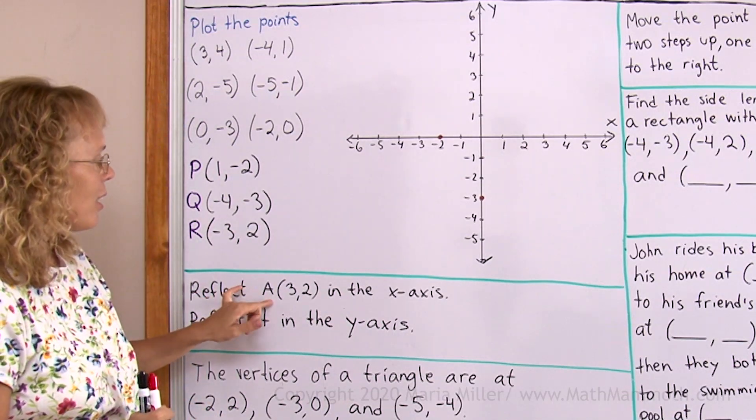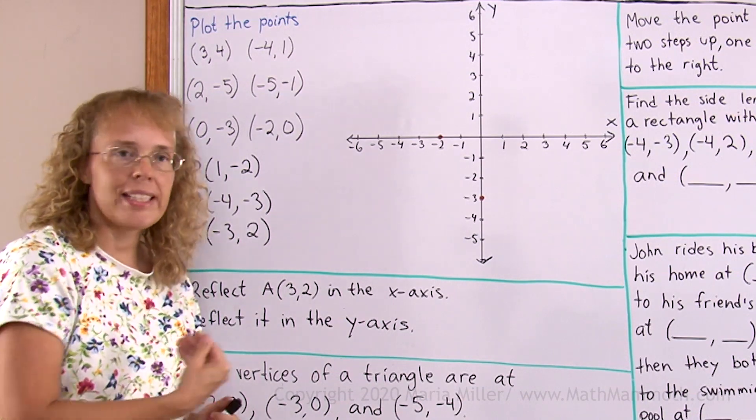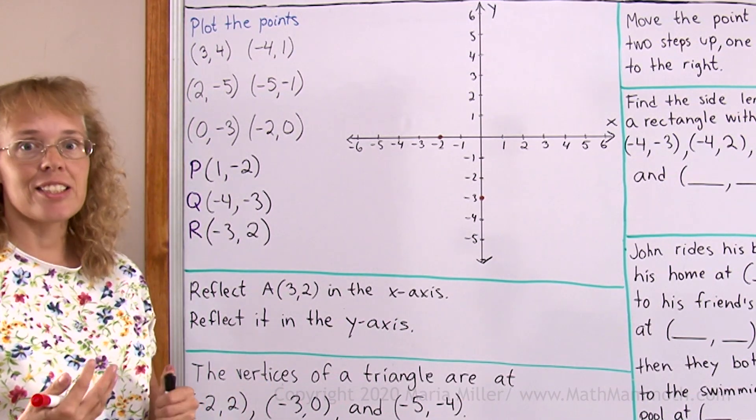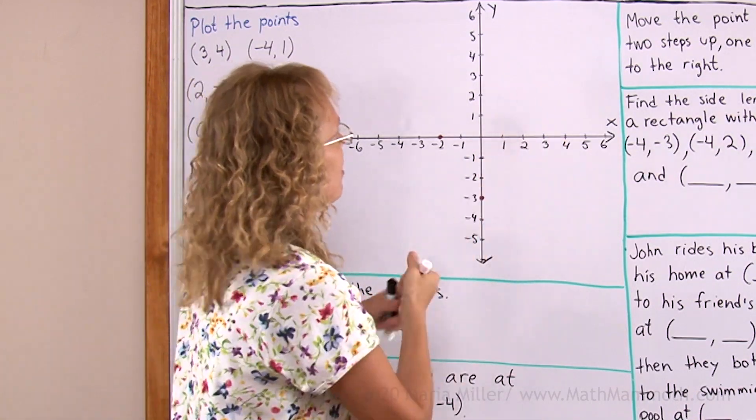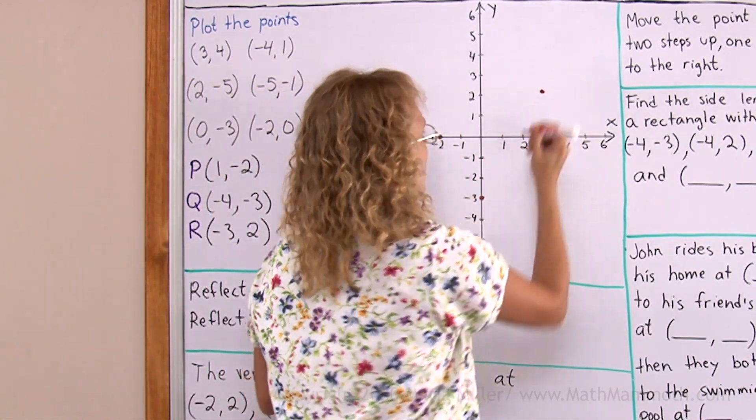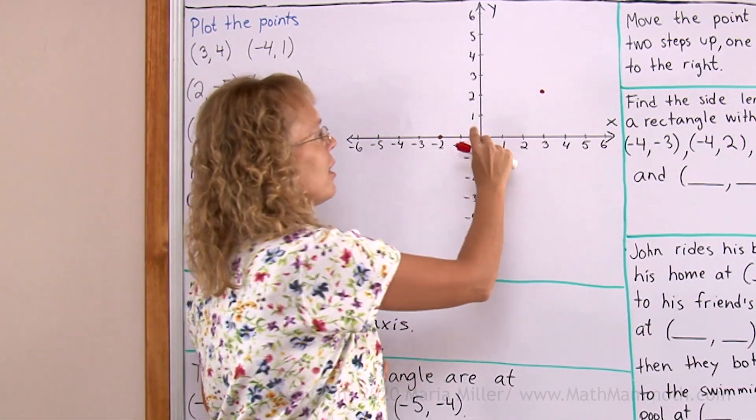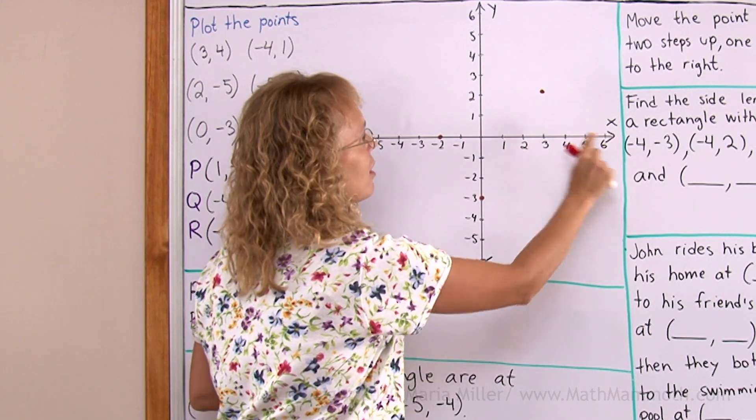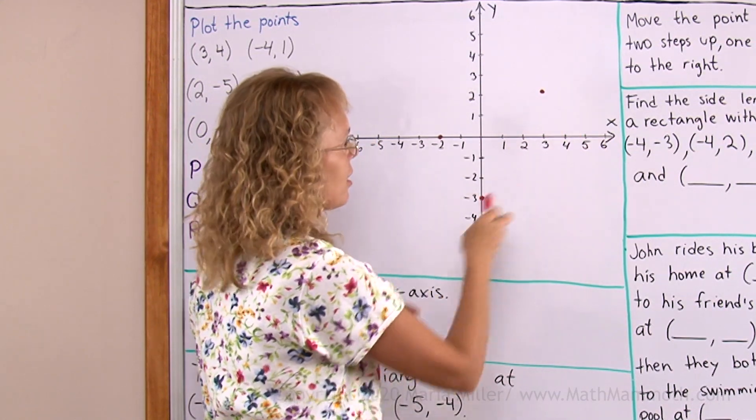Reflect A. A is a point at (3,2) in the x-axis. Let's plot the point A first and see what the reflecting is all about. A is at 3 and 2 over there. Now reflecting this point means like mirroring it in the x-axis. It is as if this was a mirror. Where would the mirror image be? It's on the opposite side of x-axis over here.